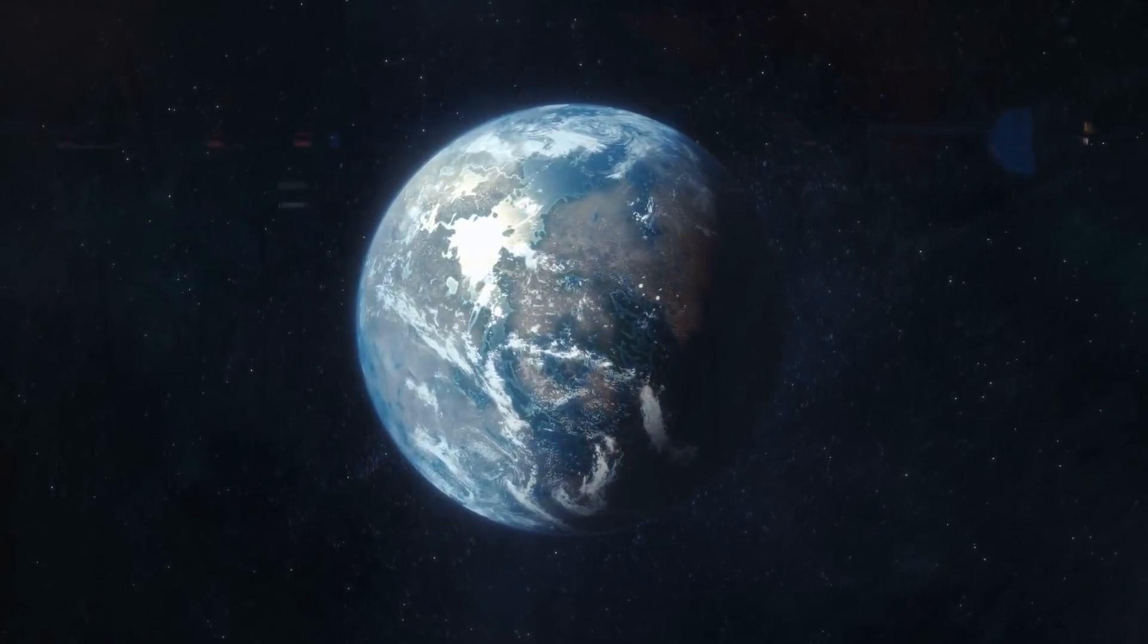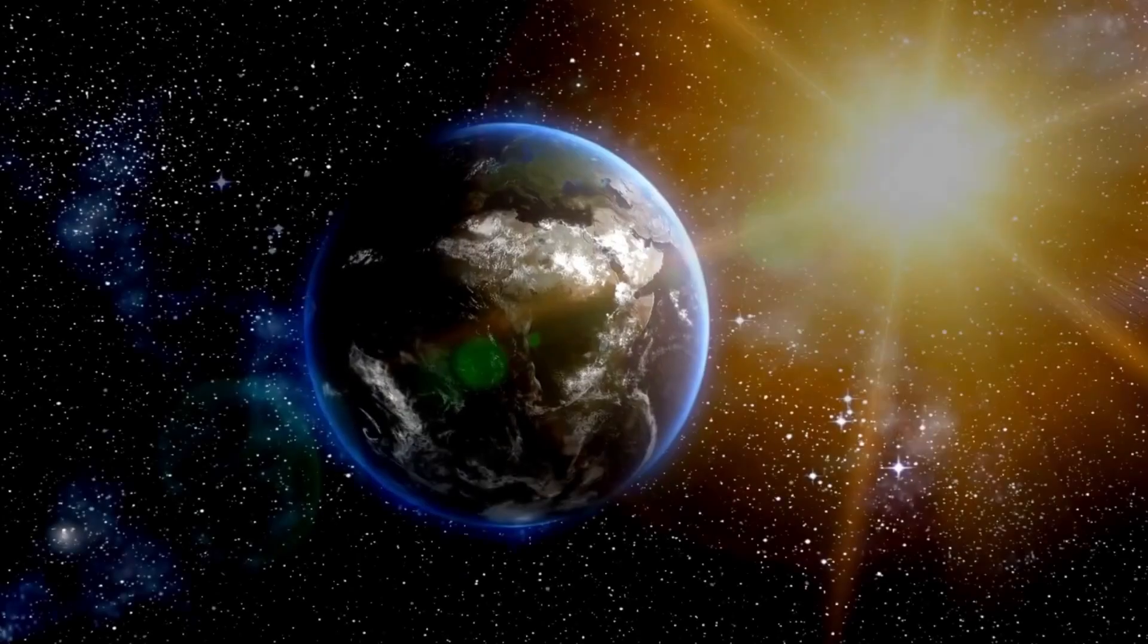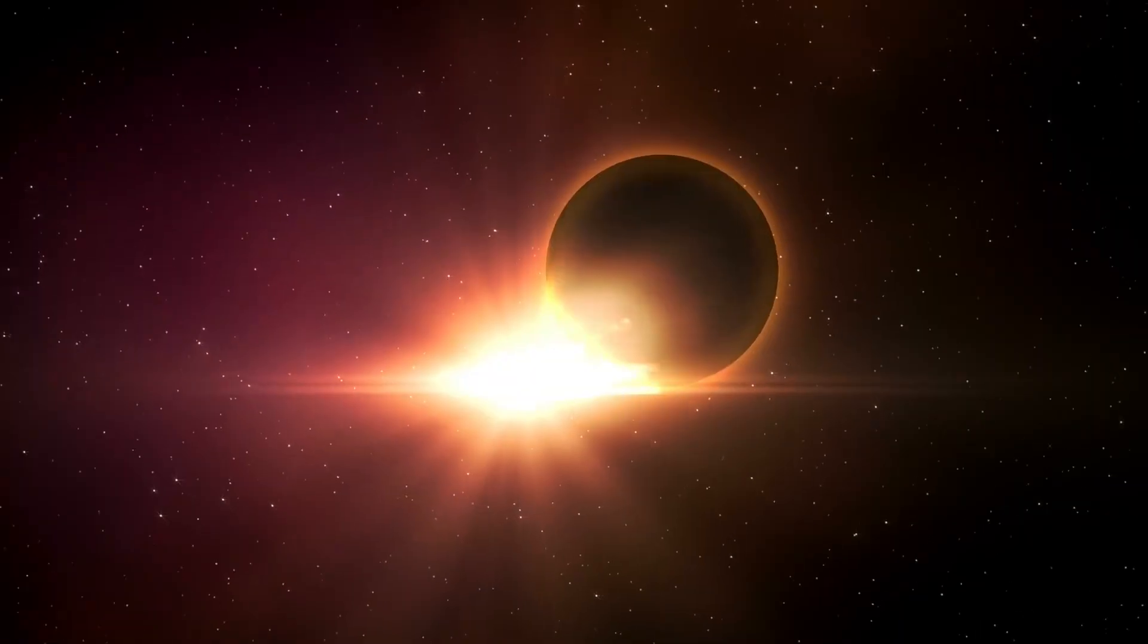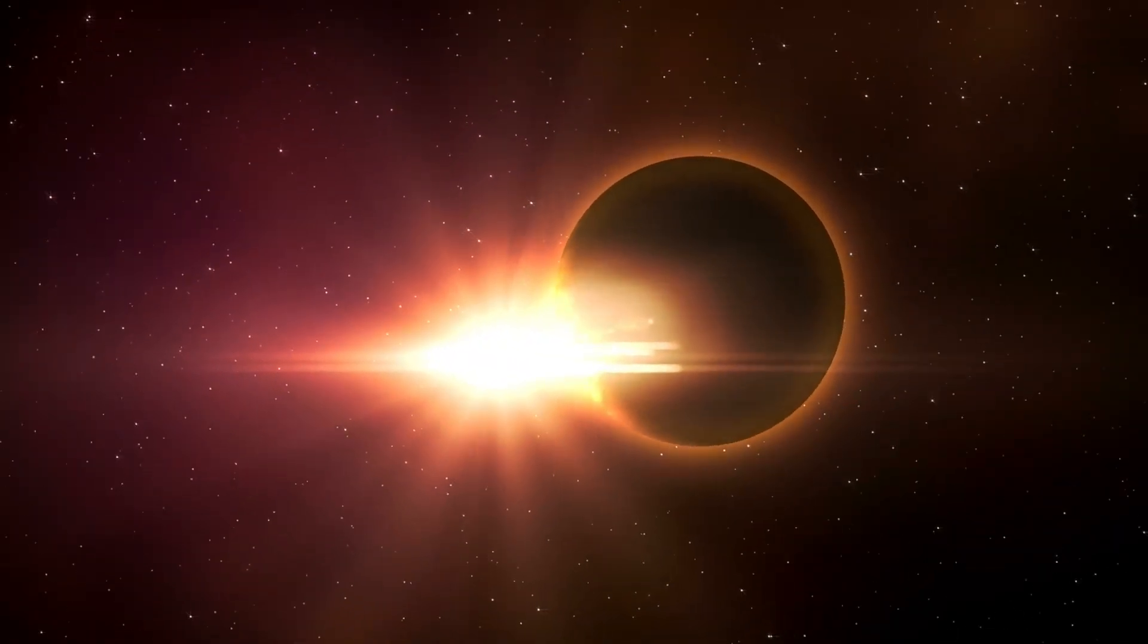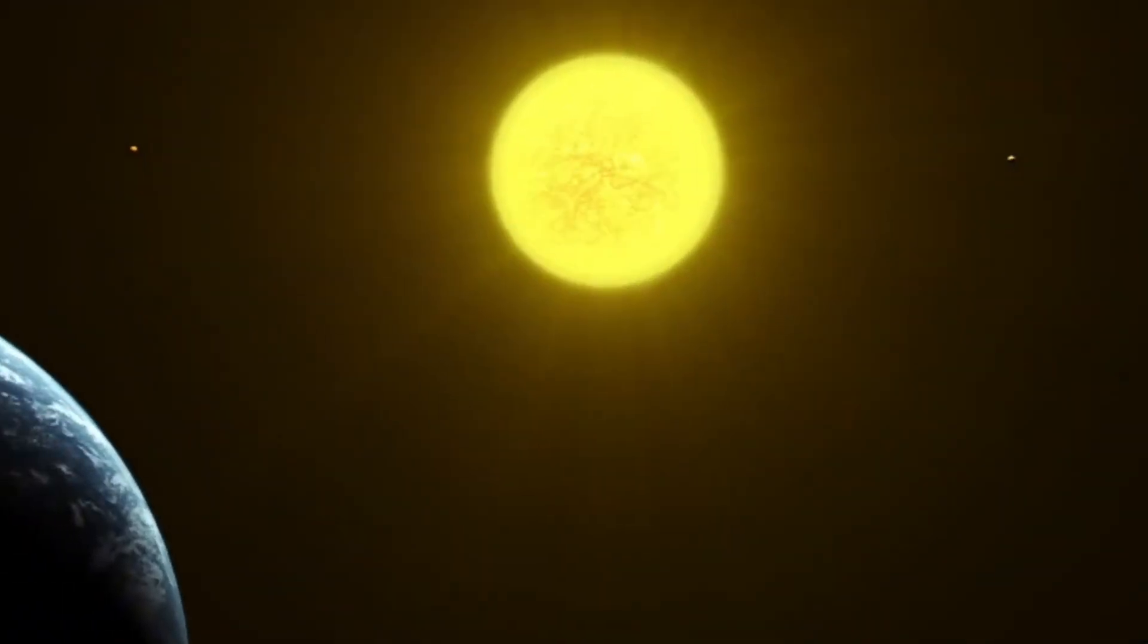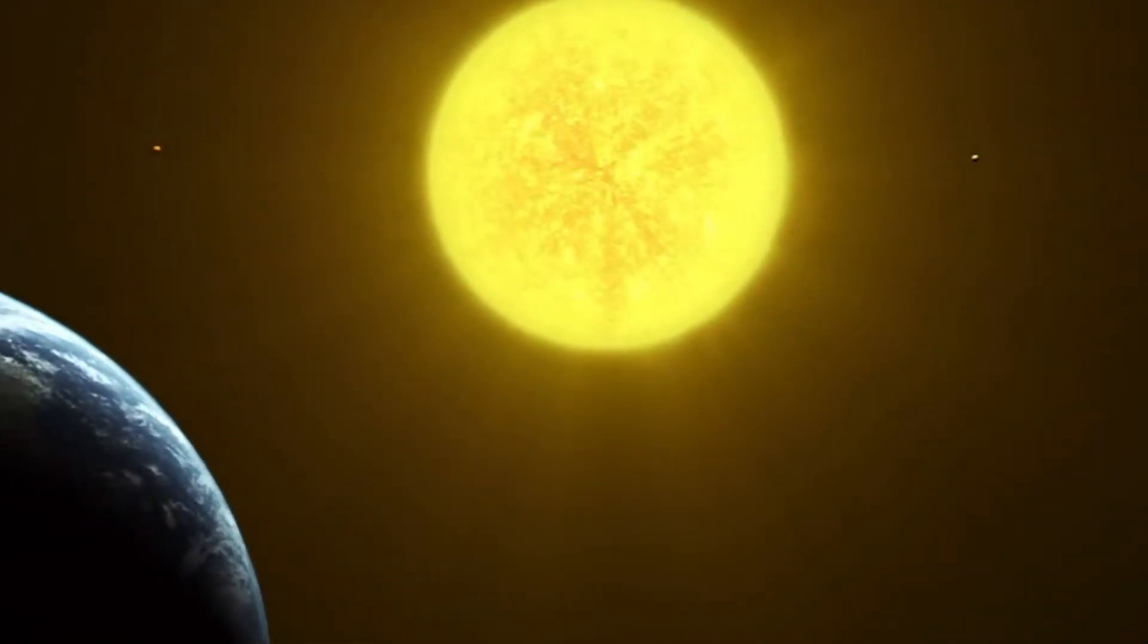Currently, Earth is expected to remain habitable for about another 1 billion years as the sun gradually increases in brightness. This increase will cause Earth's oceans to evaporate, making the planet too hot for life long before the sun even begins its red giant phase.